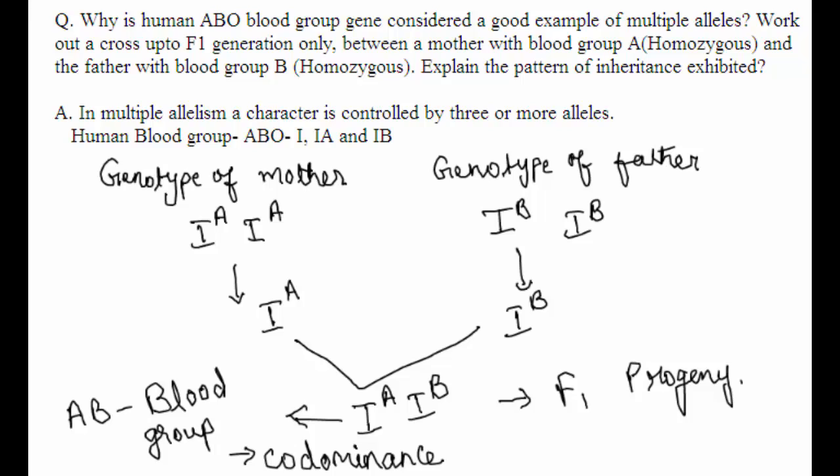Why is the human ABO blood group gene considered a good example of multiple alleles? Work out a cross up to the F1 generation only between a mother with blood group A homozygous and a father with blood group B homozygous. Explain the pattern of inheritance exhibited.